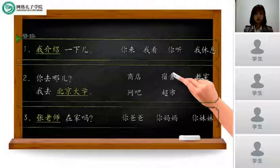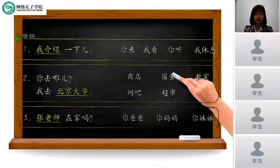For example, the first sentence, 我介绍一下, has lines, right? So we need to use the words to change it. The first given word is 你来, and the next one 我看, 你听, 我休息. 你来 means you come.